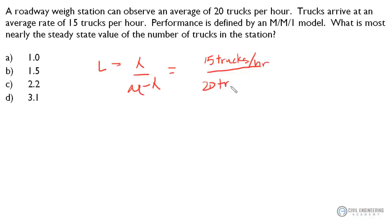We subtract lambda, which is 15 trucks per hour, and punch that into our calculator, and we get 3.0.